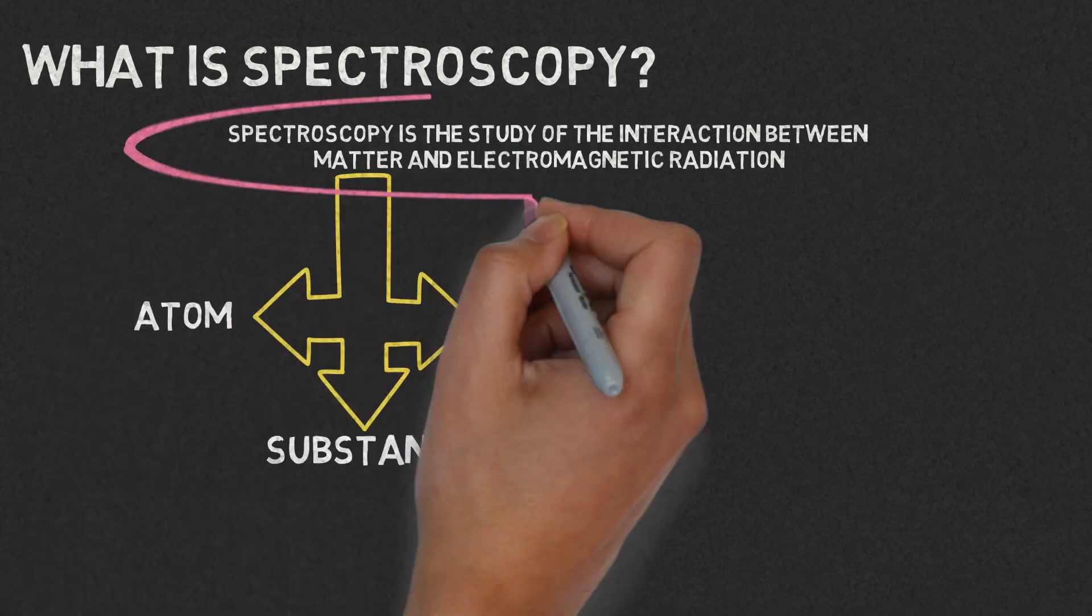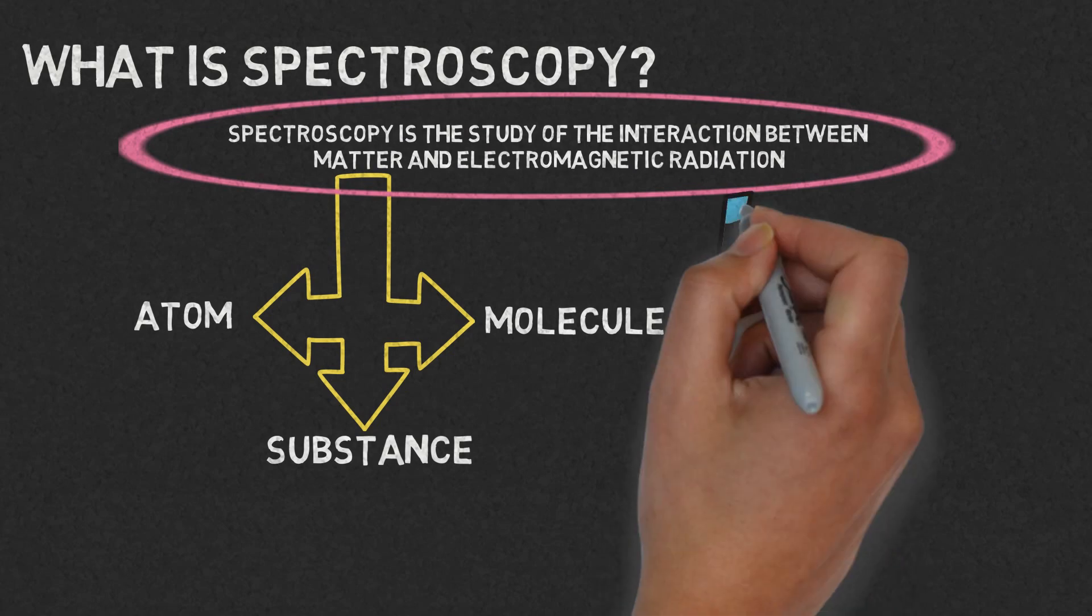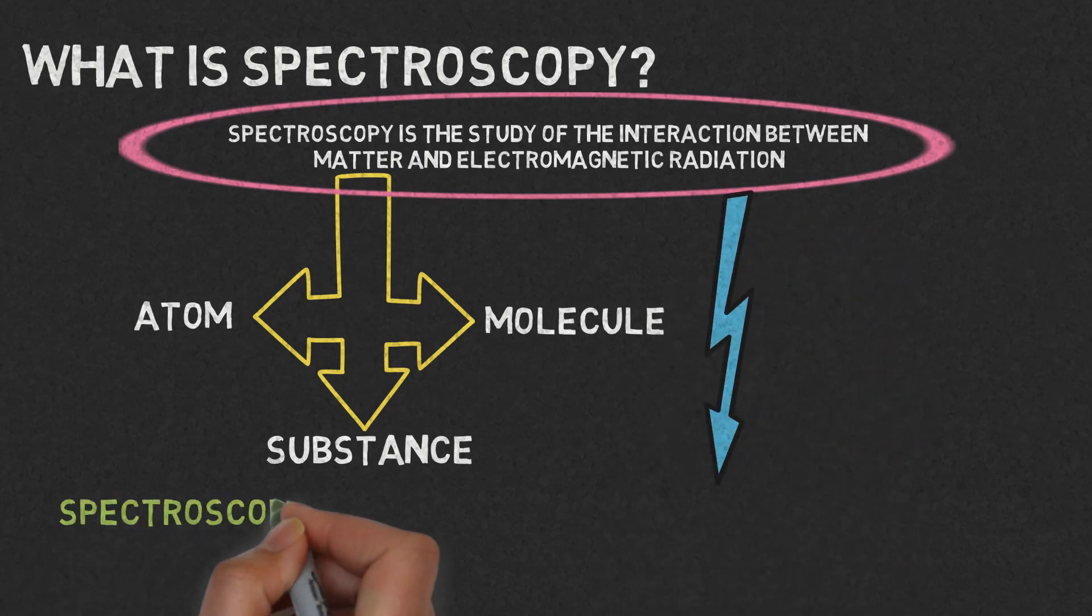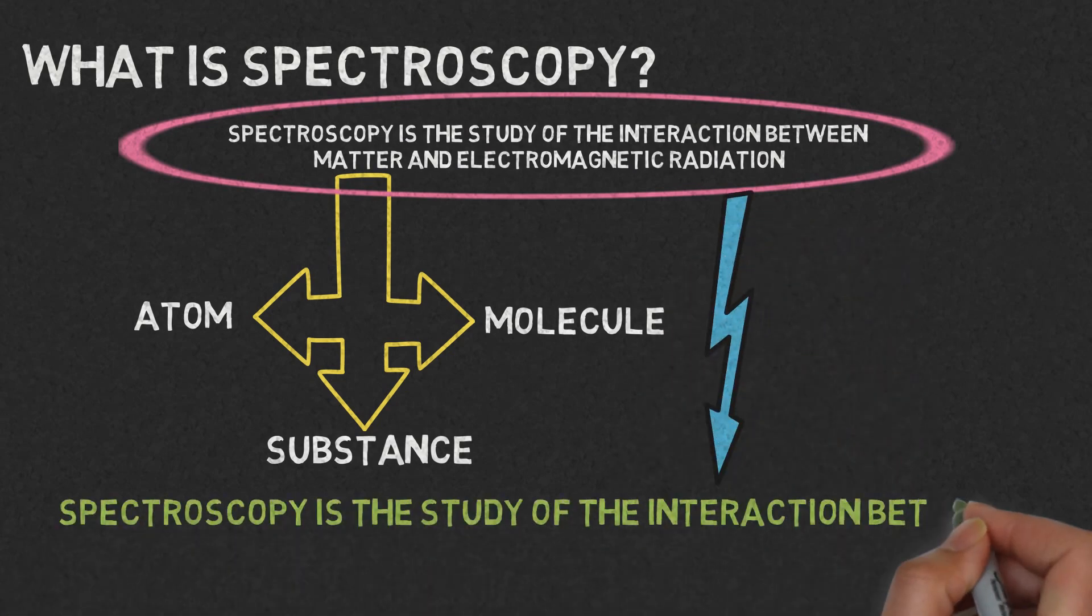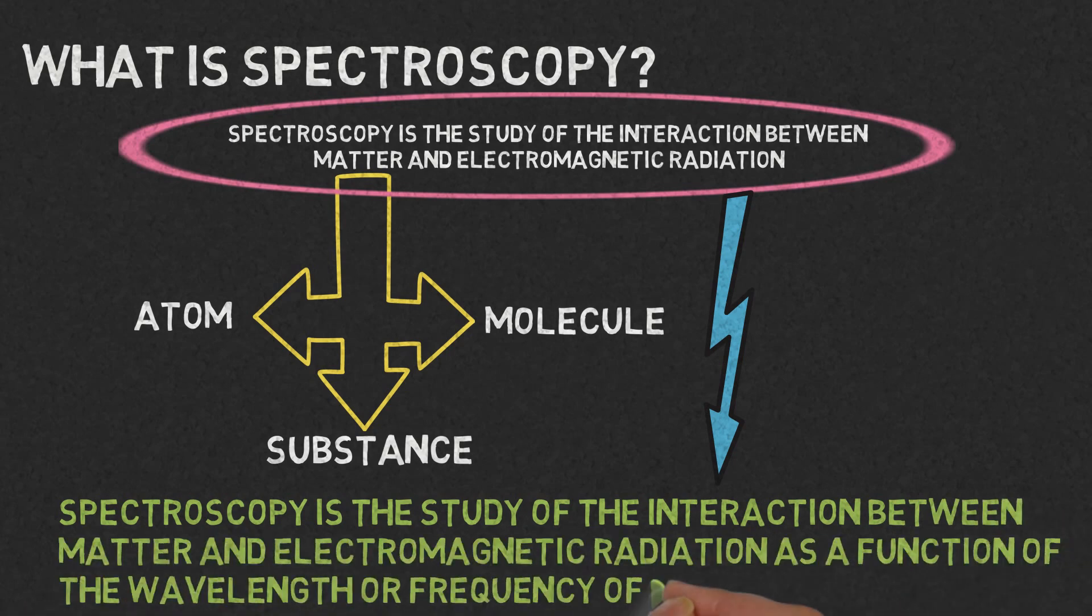Now, let us learn the real definition of spectroscopy. Spectroscopy is the study of interaction between matter and electromagnetic radiation as a function of the wavelength or frequency of the radiation.